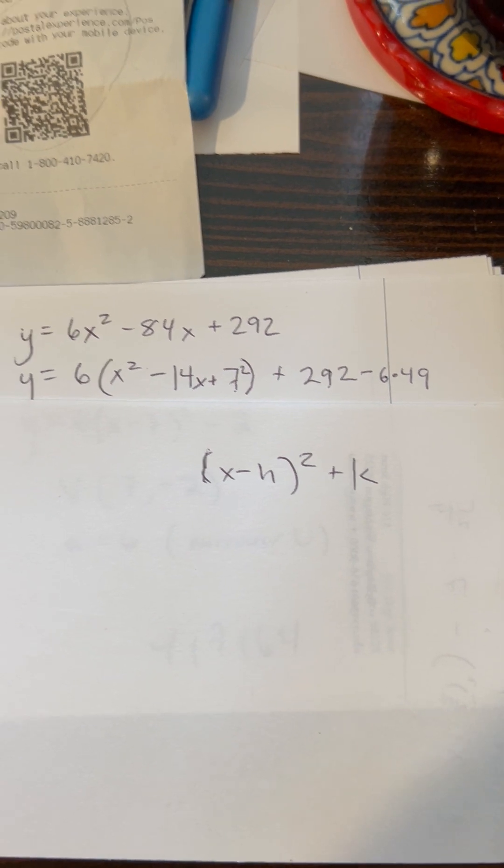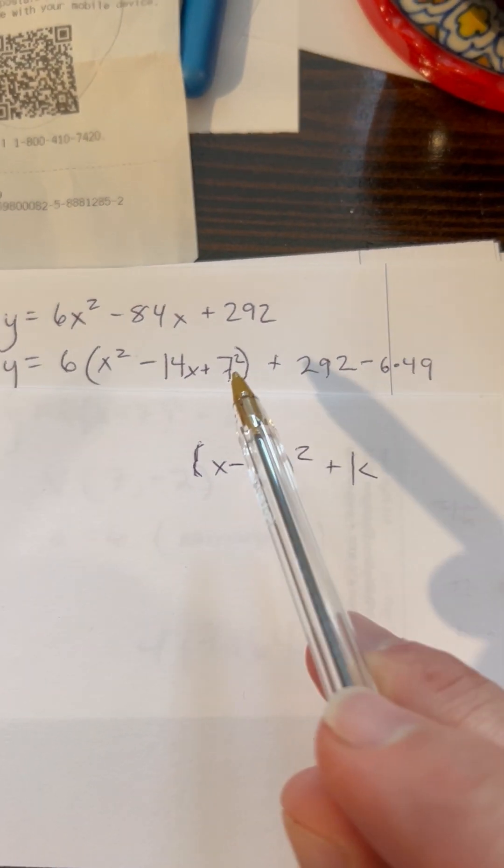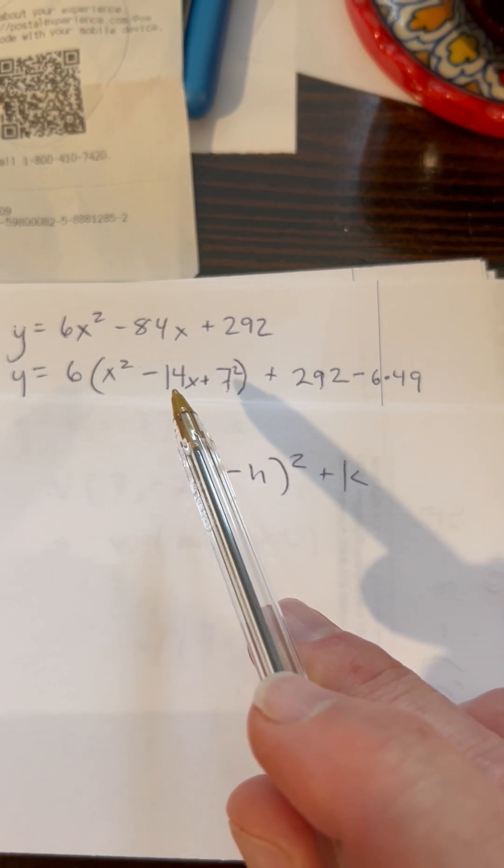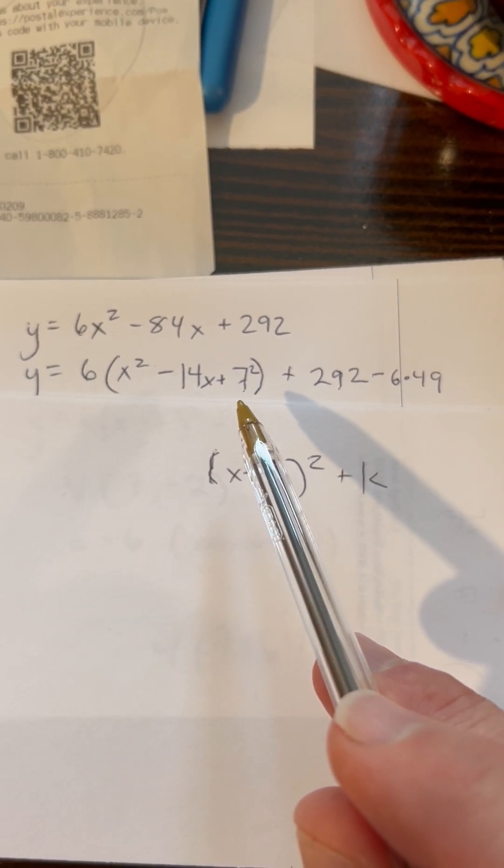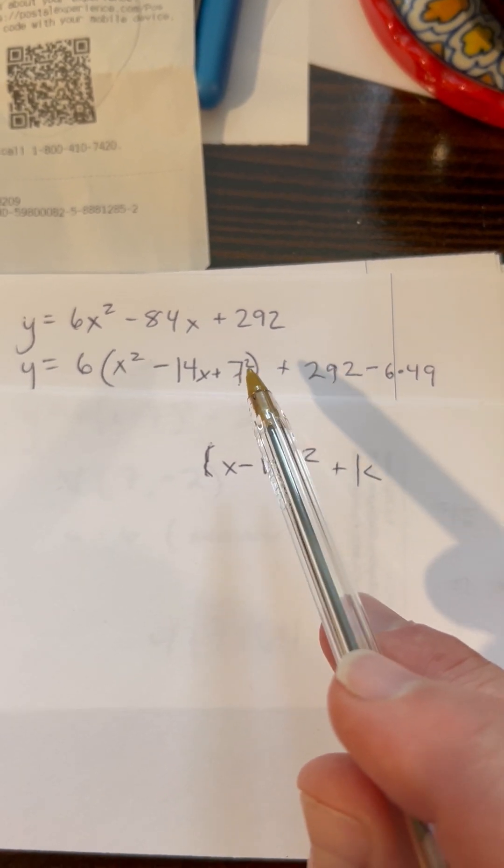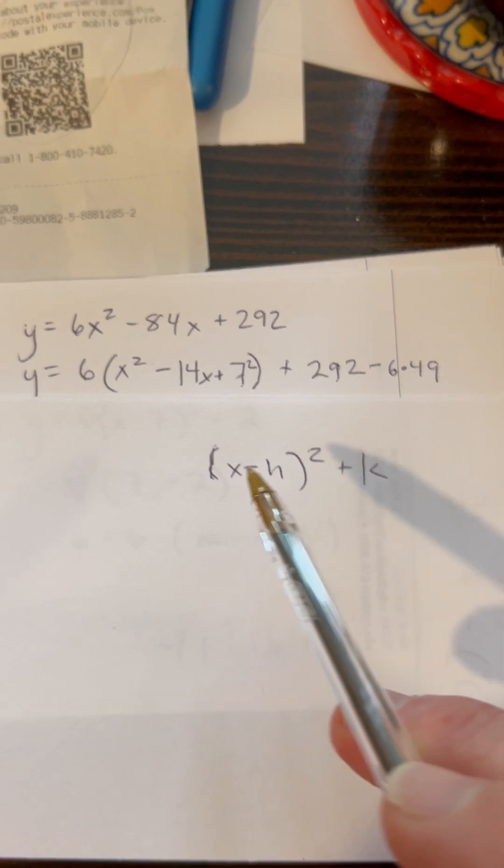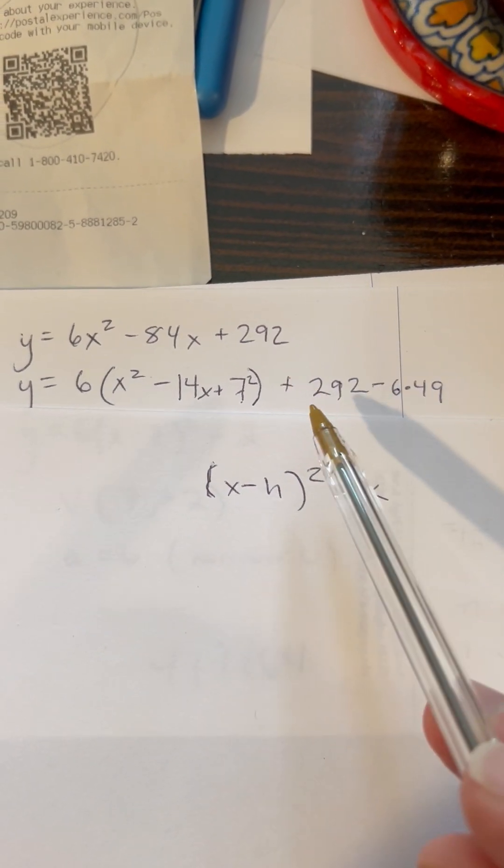And then completing the square, I've moved my 292 over here out of the way. Completing the square says I take half the middle term, which would be negative 7, and I square that, which is positive 49. Here I'm just going to leave it as positive 7². Same thing. And then here I've got my 292 that I moved out of the way.